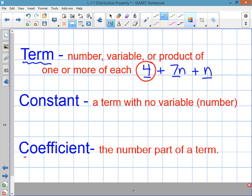And then the last term, coefficient, just refers to the number part of a term. In this term, seven n, the number part of it is the seven. So, the coefficient of this term is seven. In this term, there is no number, so you'd think, well, it doesn't have a coefficient. But whenever you have a letter without a number in front of it, it's implied to be a one. So, the coefficient for this one is a one.